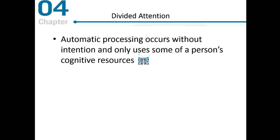Let's get back to this issue of automatic processing, because that's what participants reported. They reported that eventually their processing of these frames became automatic. Automatic processing occurs when two things happen: it occurs without intention—that means it happens automatically, we don't even notice—and it only uses some of a person's cognitive resources.